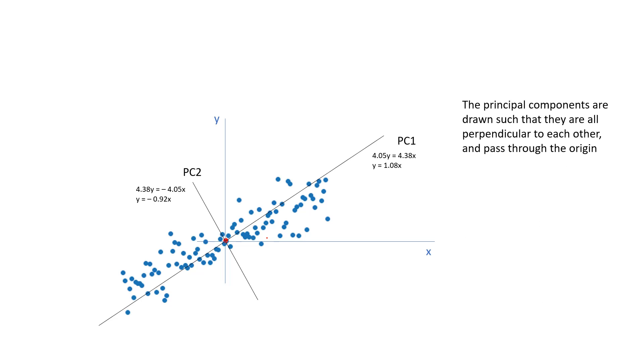Let us look at a few pointers. The principal components are drawn such that each of them are perpendicular to each other, and all of them pass through the origin. After drawing this PC1, if we want to draw the PC2, now, since this is a 2D graph, we have two features x and y, we will have two principal components.